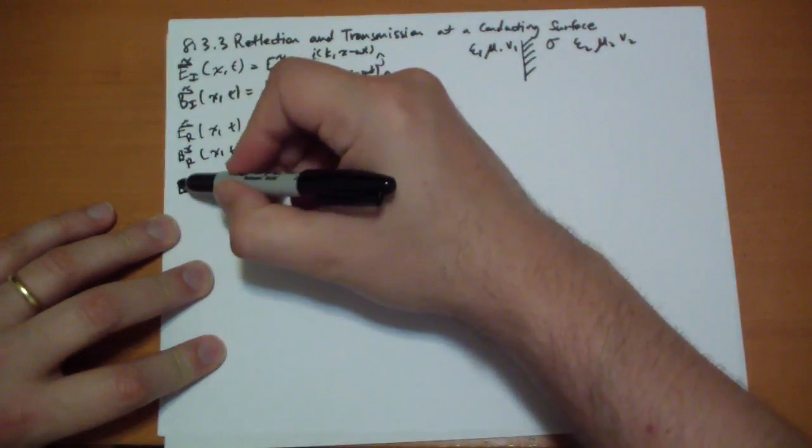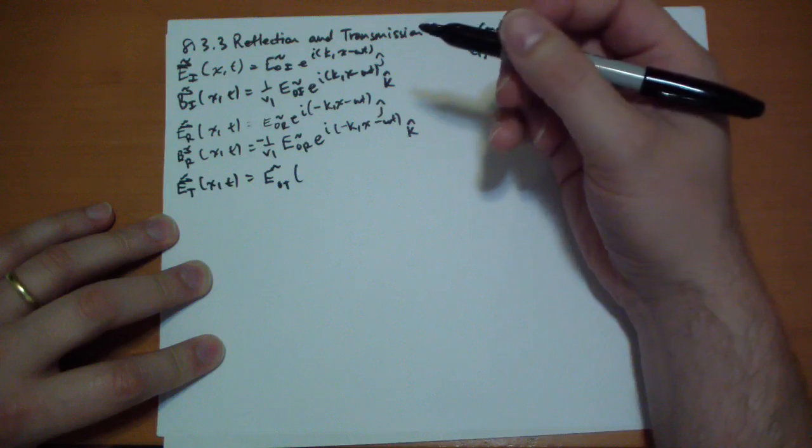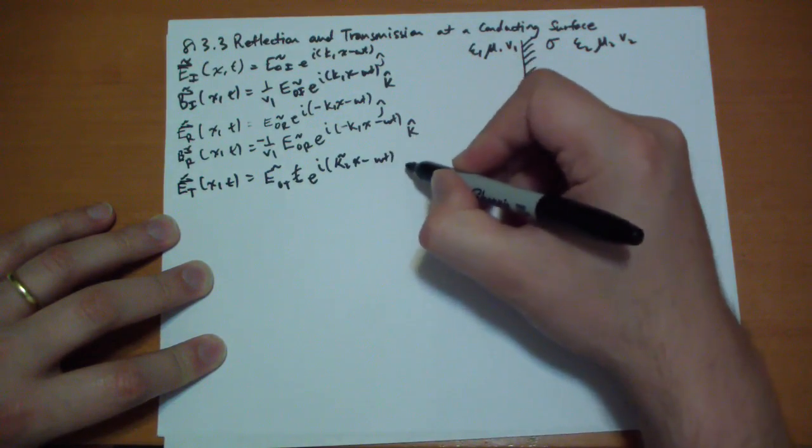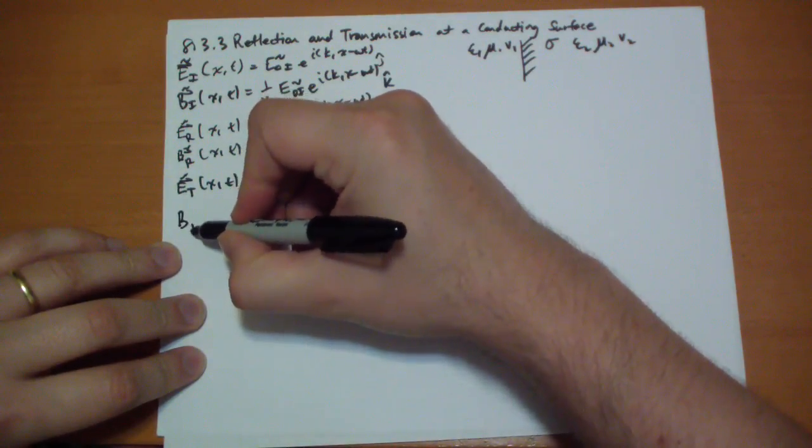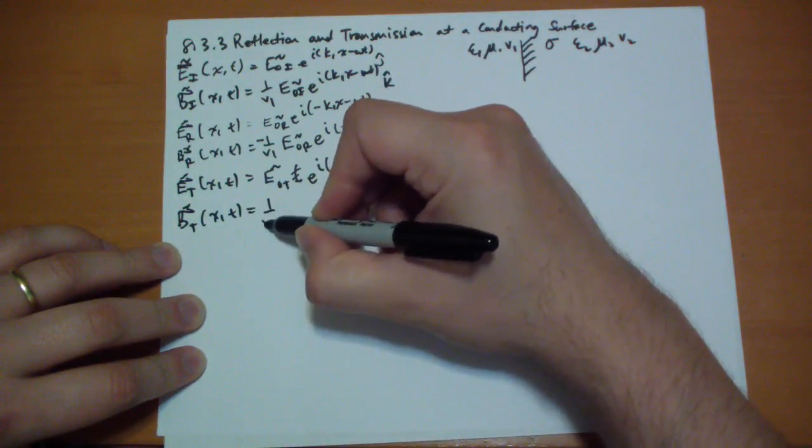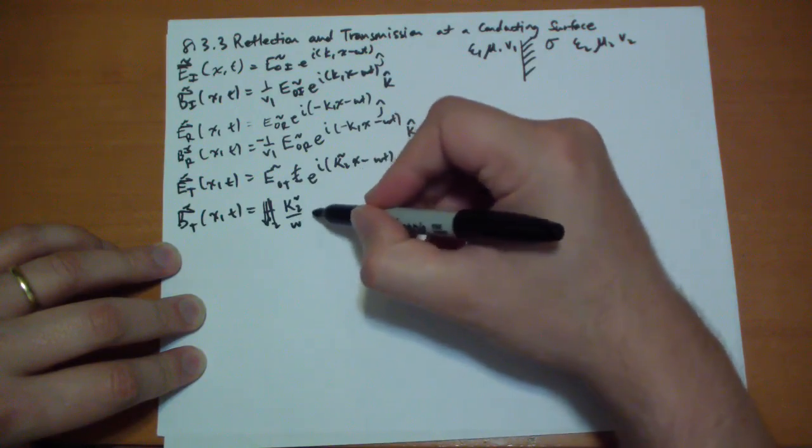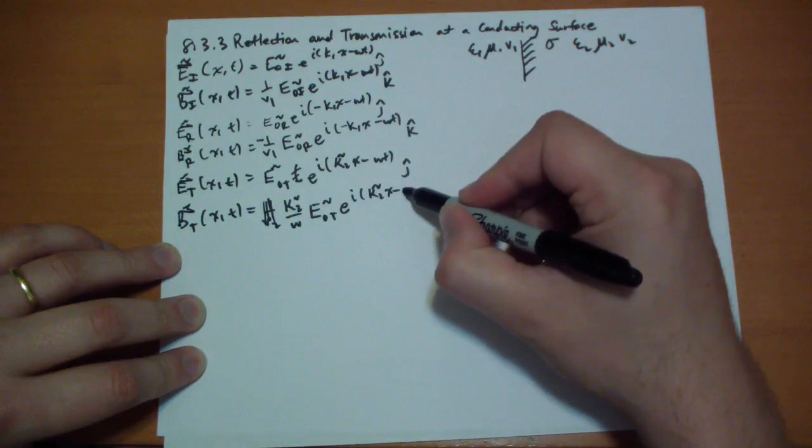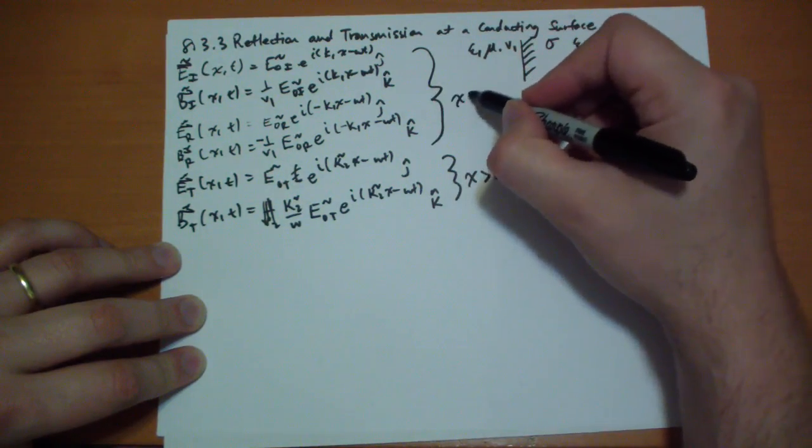The transmitted wave looks like this. It has its own complex constant there, e to the i kappa 2 complex x minus omega t pointing in the j-hat direction. And this complex factor, as we discussed earlier, has the effect of introducing an attenuation, so as you go deeper into the surface the wave gets weaker and weaker. And then we have our magnetic transmitted wave, and that's going to be 1 over v2. I'm sorry they have, they do it this way: kappa 2 complex divided by omega e-naught transmitted complex, e to the i kappa 2 complex x minus omega t pointing in the k-hat direction. So this is when x is greater than 0 and this is when x is less than 0.